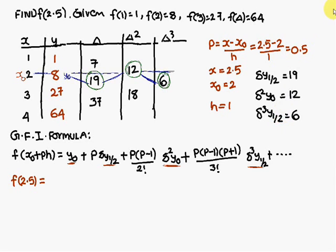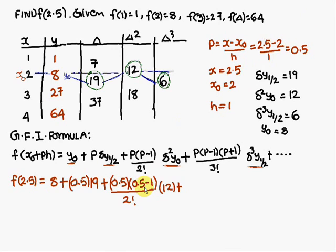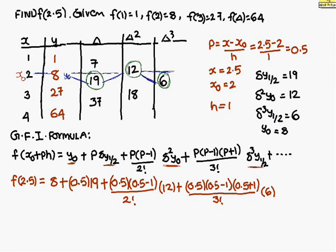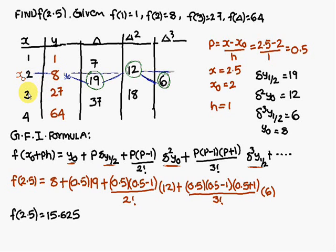Substituting: y₀ = 8, p = 0.5, Δy(1/2) = 19, Δ²y₀ = 12, and Δ³y(1/2) = 6 into the formula gives f(2.5) = 15.625. We can verify this is correct because 2.5 lies between 2 and 3, so the answer should lie between 8 and 27 — and 15.625 does indeed lie between 8 and 27.